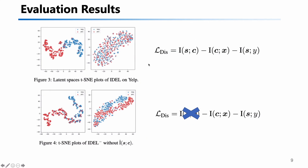This is the result — after using mutual information between x and c versus not using it. We can see on the left this is the style disentanglement. After using the mutual information, in this space we can separate different styles like positive and negative better than if we don't use the mutual information of s and c.